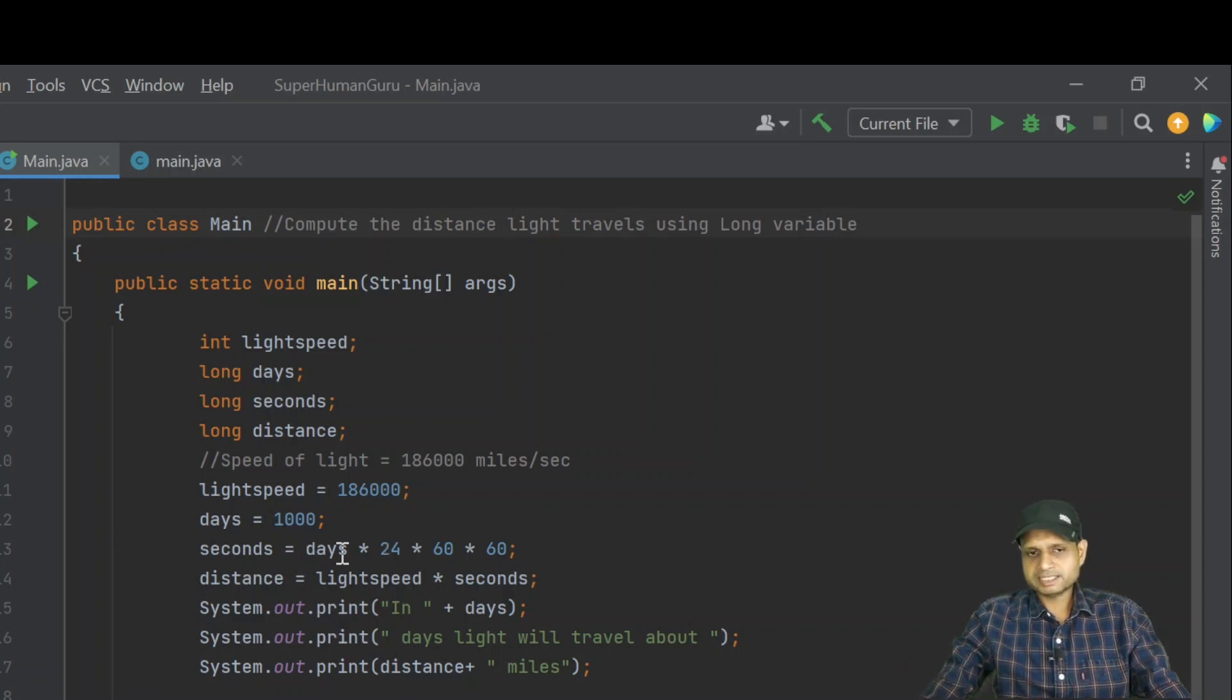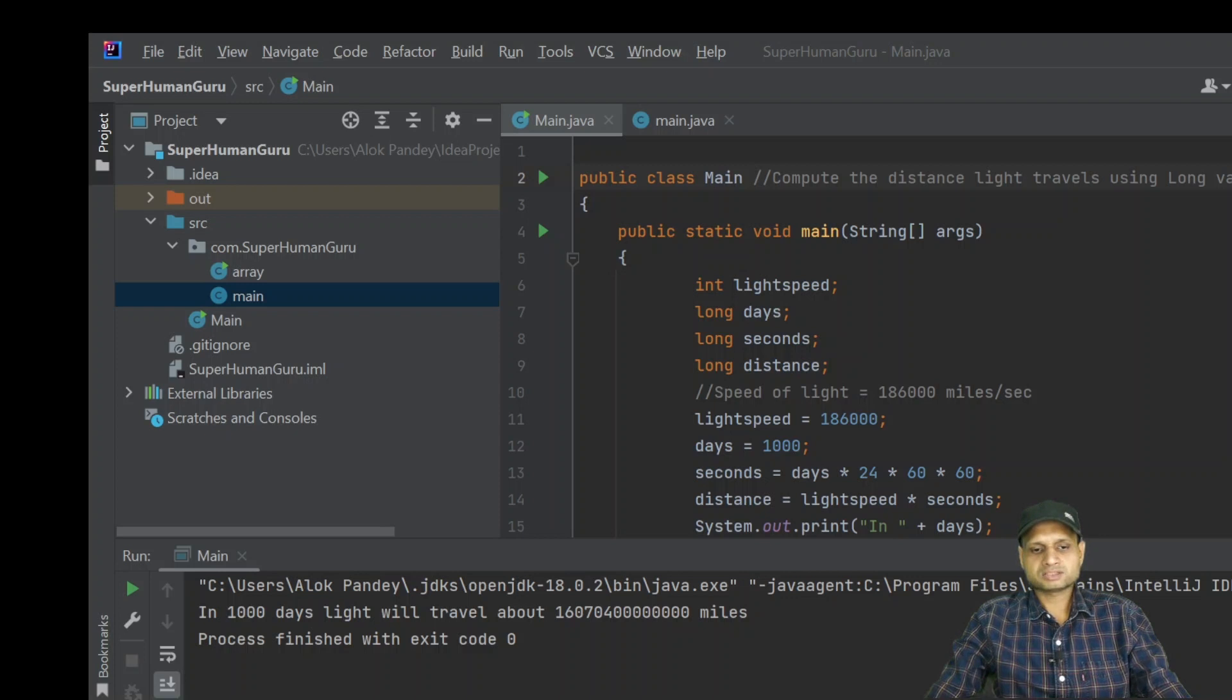For that, we have to calculate how many seconds are in thousand days. We will multiply days into 24 hours into 60 minutes into 60 seconds. So the total seconds in thousand days, this value will be stored here. Then distance equals light speed into seconds. 186,000 into the number of seconds in 1000 days. This value will be stored. If we execute this program, we can check the output that comes.